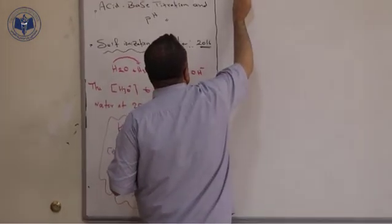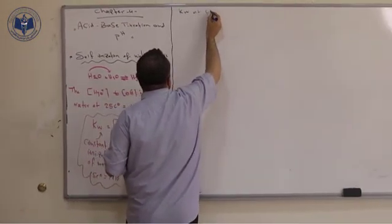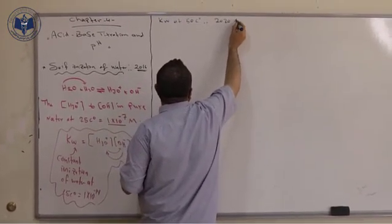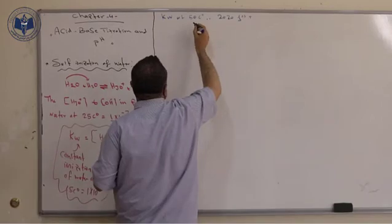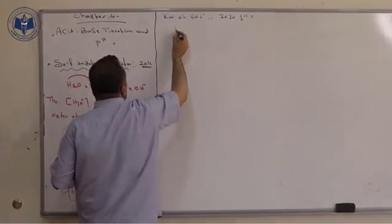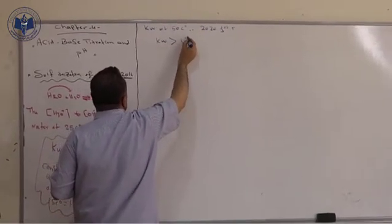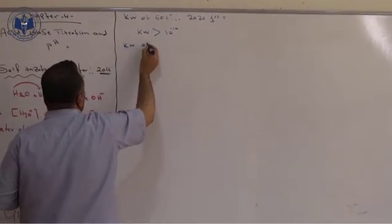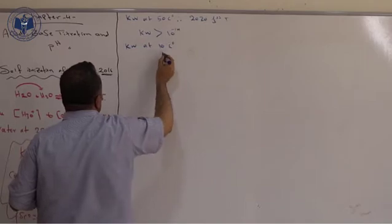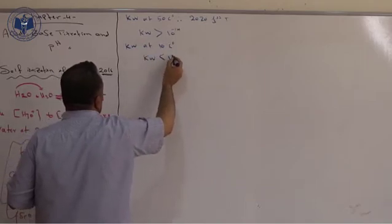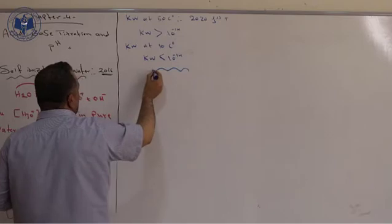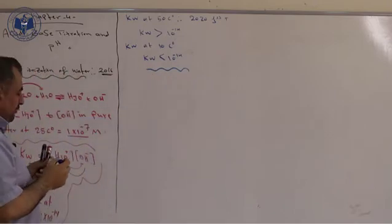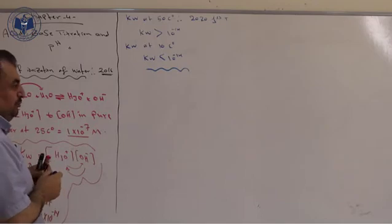KW at 50 degrees Celsius — we have this question from the first term — KW is greater than 10 to the power negative 14. But KW at 10 degrees Celsius, KW is less than 10 to the power negative 14. So constants in chemistry always change by one factor: temperature.